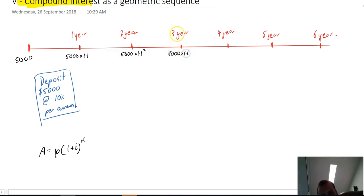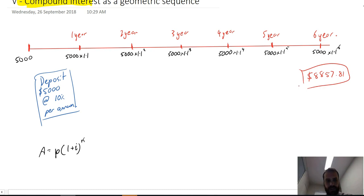And I think you can see where we're going with this: 1.1 to the power of 3 years, $5000 times 1.1 to the power of 4 years, and finally $5000 times 1.1 to the power of 6 years. So we've gone all the way through this, and this is how much money we will have at the end of years: $5000 times 1.1 to the power of 6. If I put that into my calculator, I get $8857.81 if I round up.